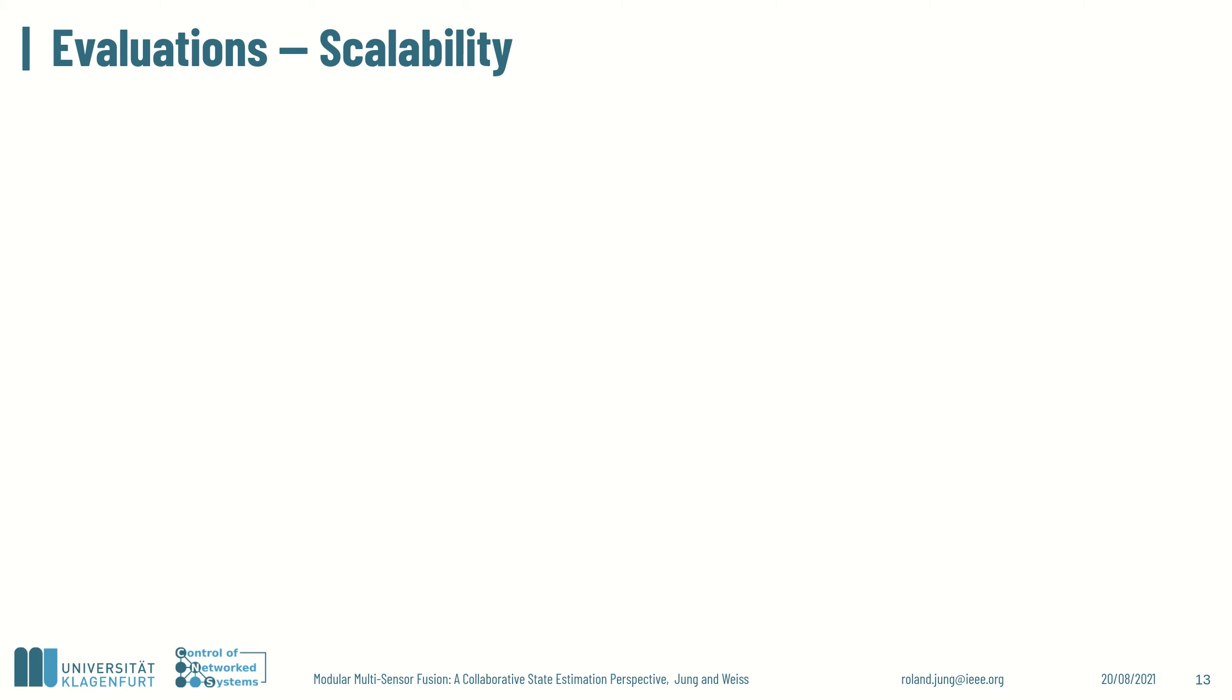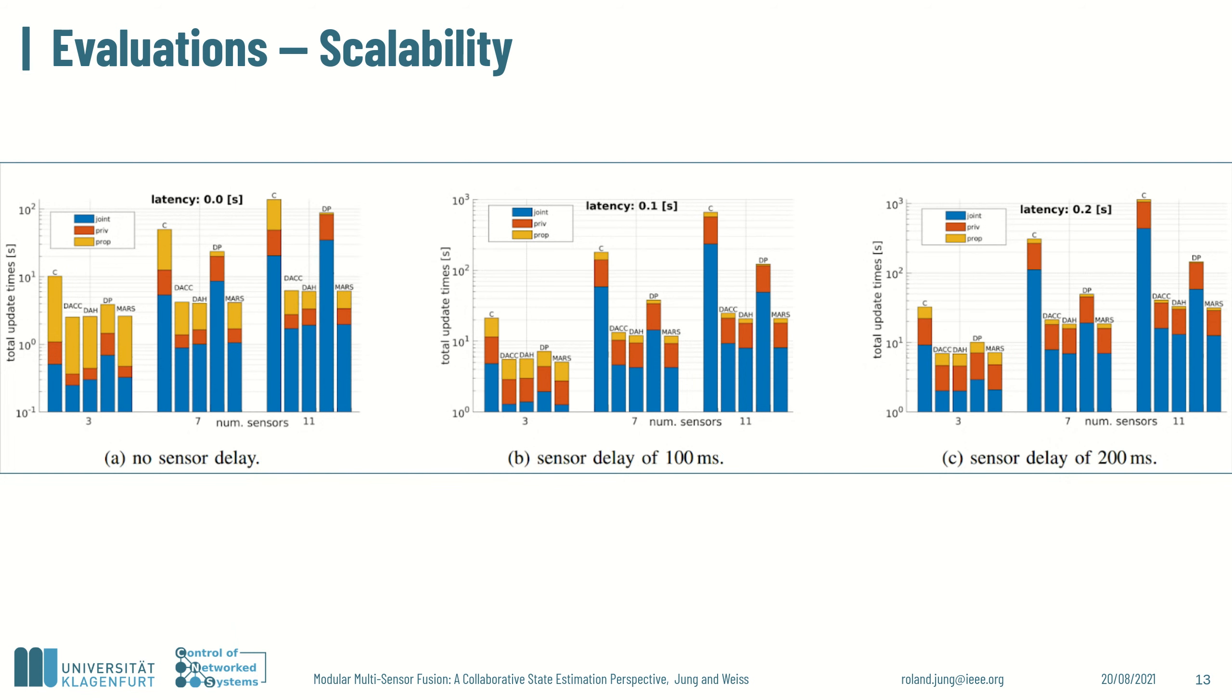As we consider both private and joint observations, we added to an IMU per increment a barometer and absolute position sensor. This figure shows the total execution time in a logarithmic scale and the DACC, DAH and MARS scale similarly without sensor delay. By increasing the sensor delay, the execution time of the centralized equivalent approaches increases tremendously while DAH and MARS start performing better than DACC.